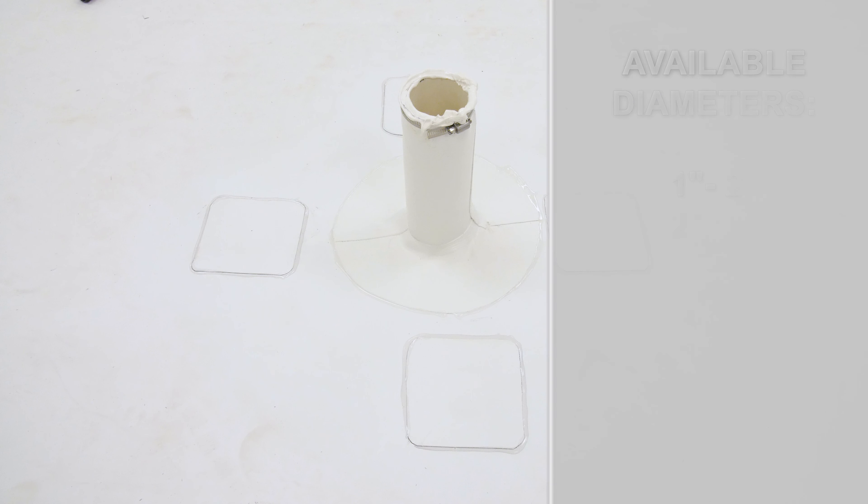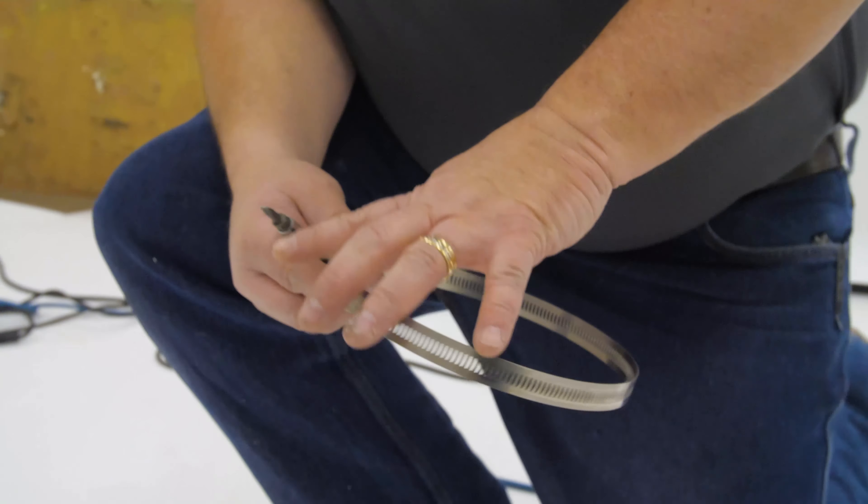Split pipe boots are available in diameters from 1 inch to 6 inches and can be used to wrap around projections that cannot be flashed with a pre-molded pipe boot. Each split pipe boot is supplied with a stainless steel banding clamp.